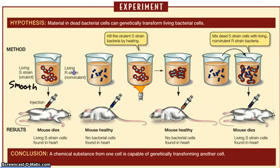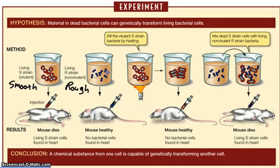He found a different strain he called the R strain because under the microscope it looked rough. When he injected this rough bacteria into the mouse, the mouse lived — yay mouse! So there was a difference between the two strains. The R strain wasn't really anything to worry about because the immune system of the mouse or human could fight it off. The S strain was the one he wanted to figure out how to stop and cure.